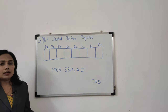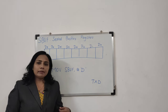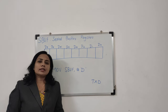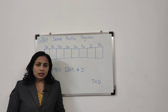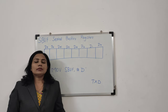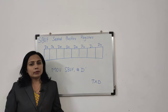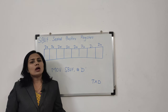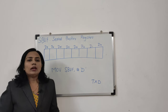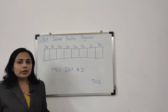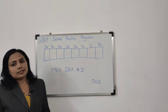Similarly, whenever you are going to receive data on the SBUF register, the 8051 microcontroller will remove the start bit and stop bit, and then you will have the actual data value in the SBUF register.